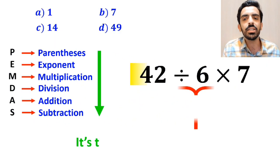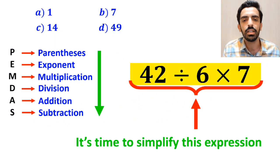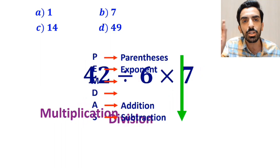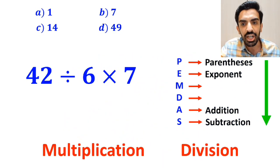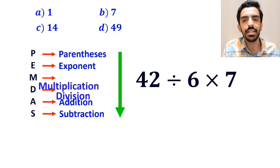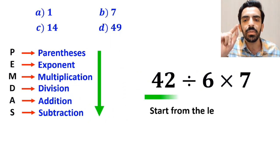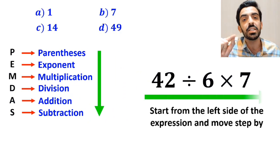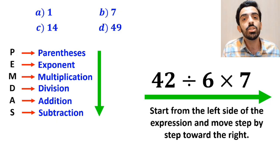Now, it's time to simplify this expression. It's very important to note that in the PEMDAS rule, multiplication and division have exactly the same level of priority. In this case, all we need to do is to start from the left side of the expression and move step by step toward the right.